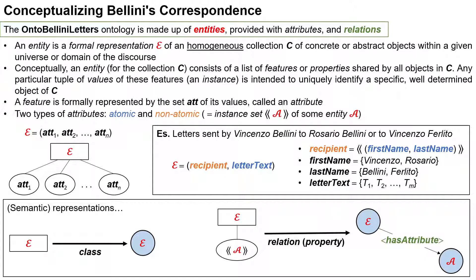I will now describe the main concepts involved in the Onto Bellini Letters ontology. Onto Bellini Letters is made up of entities provided with attributes and relations. An entity is a representation of a homogeneous collection of concrete or abstract objects within a given universe of discourse. An entity for a collection consists of a list of features or properties shared by all objects. Entity attributes are basically divided into two main classes: atomic attributes and non-atomic attributes. Atomic attributes carry a unique, structured type of information, whereas non-atomic attributes are defined in terms of atomic ones and correspond to entities.